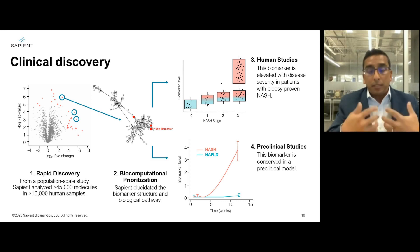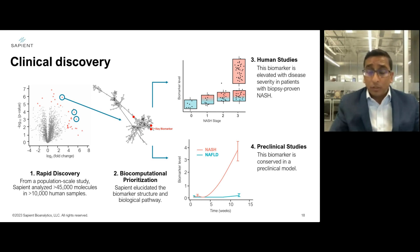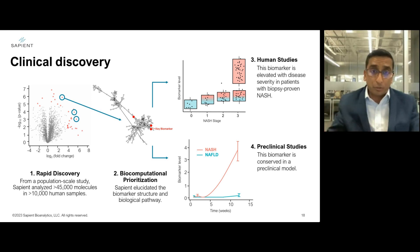We can take one key biomarker, isolate it, solve its underlying structure, and develop diagnostic assays around it. We can also validate this in independent human and preclinical studies, as shown on the right.